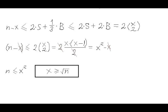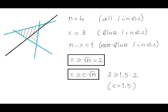We are done. For n equals 4, we could paint three lines blue, and if we could prove it, then for n equals 4, c — as mentioned in this problem — would be one and a half. But in this video, we have proved only the basic statement in which c is equal to 1.